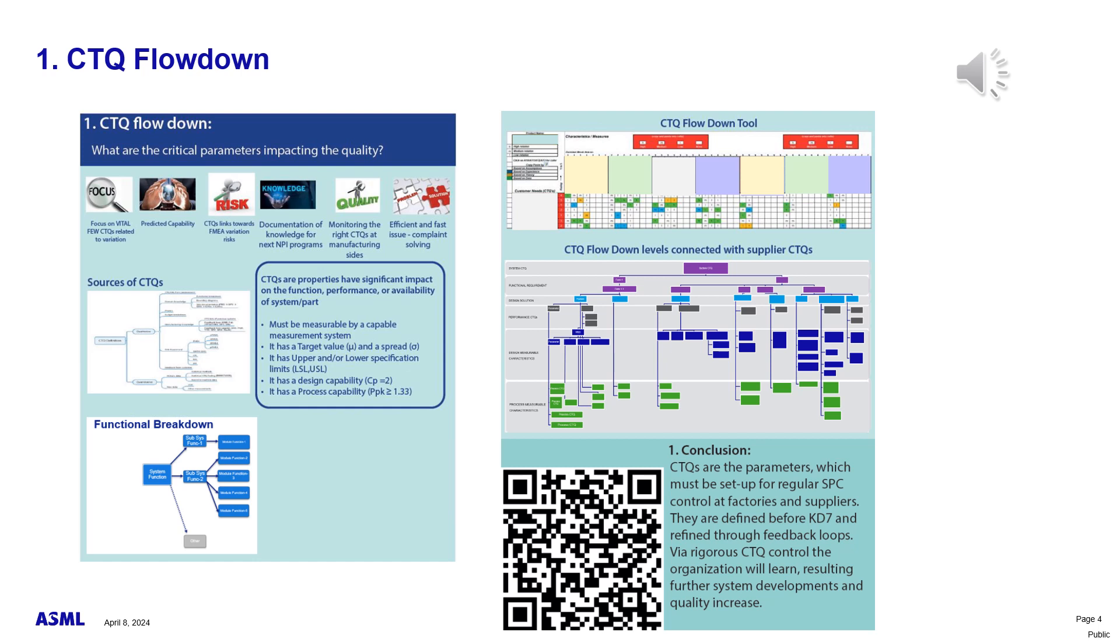Functional breakdown structure is a perfect way to show this link. On our poster, you might see an example of a CTQ flowdown which cascades from system performance to functional requirements, detailed design solutions, and process performance parameters at our suppliers. Here, we can clearly show how process variation at our suppliers create an impact on our system performance.